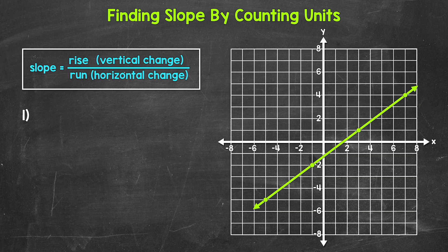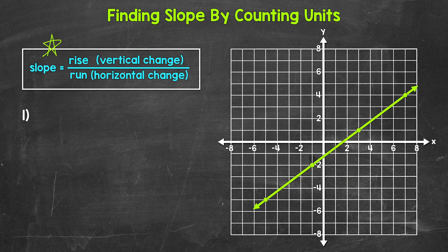Let's jump into number one, where we need to find the slope of the line graphed on the coordinate plane. Looking at the line, notice that it is moving upward as it's moving from left to right. This is what we call a positive slope. Slope equals the rise over the run — the vertical change over the horizontal change. When finding slope, we use any two points on the line; it doesn't matter which two, we will get the same slope. So let's use this point right here and this point right here.